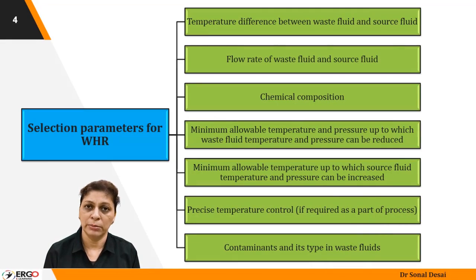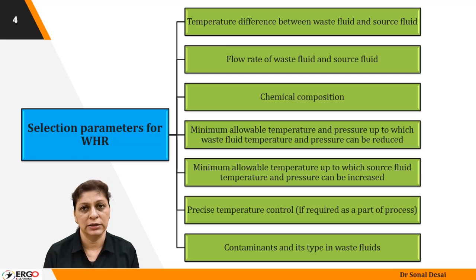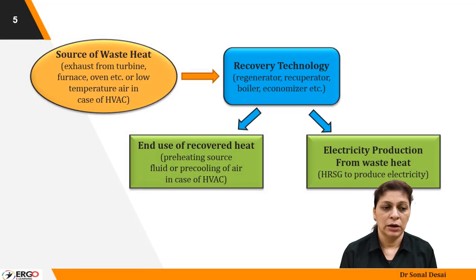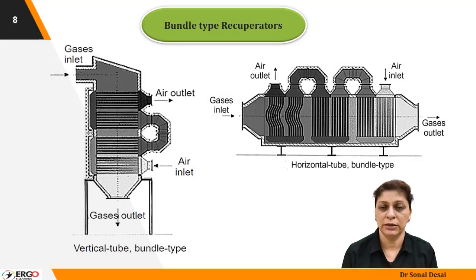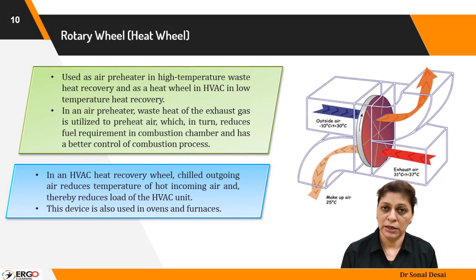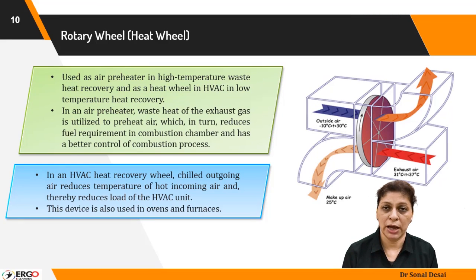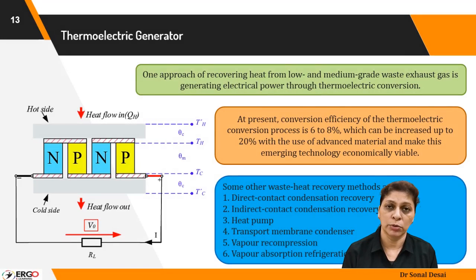Key parameters that decide the type of heat exchanger are covered, and how much heat is wasted in the stream coming out of industry is quantified with calculations shown. Conventionally known devices — recuperators and regenerators — are explained in different configurations in depth. The air conditioning industry exhausts cold temperature air, and how to recover this cold temperature air in a heat recovery wheel is also explained.